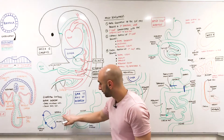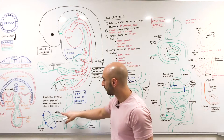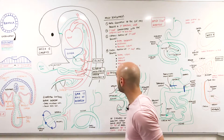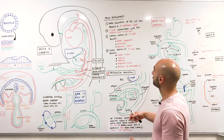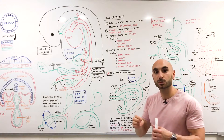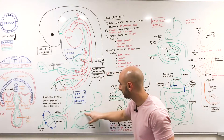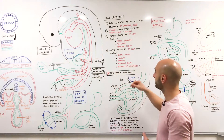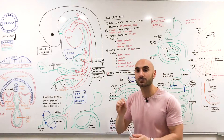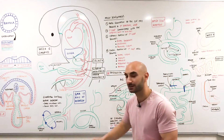The superior mesenteric artery is the axis around which those intestinal loops rotate. The cephalic portion ends up at the bottom, and the caudal portion - your colon - will be at the top. The cephalic portion of the primary intestinal loop will become the distal duodenum after the bile duct, the jejunum, and the proximal ileum. The caudal portion will become the distal ileum, the cecum, the appendix, the ascending colon, and the proximal two-thirds of the transverse colon. All of this together is the midgut.